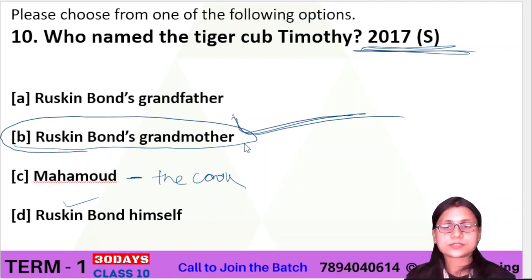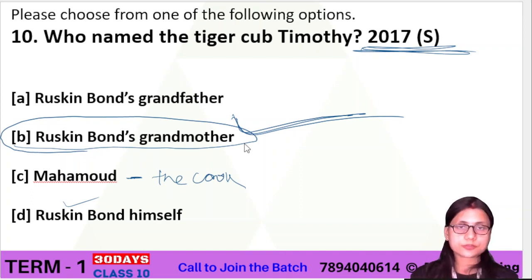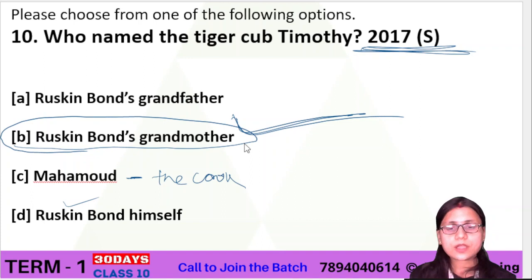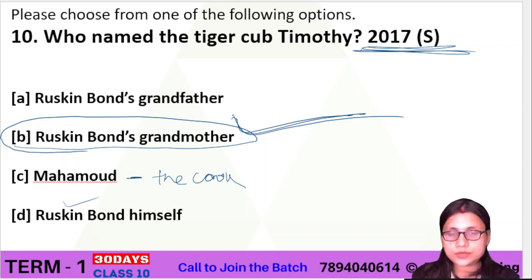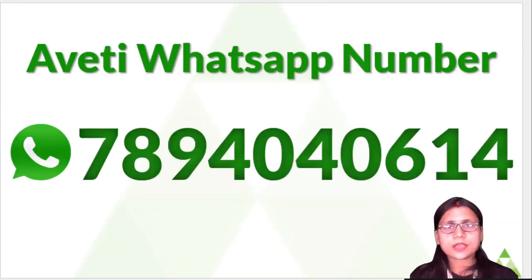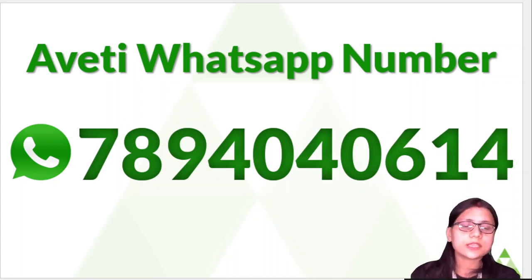So here are 10 important previous year questions we have discussed as per our syllabus. These are the most important questions. I hope all of you have cleared your doubts. If you have any queries, you can contact us through Aveti's WhatsApp number: 7894040614.